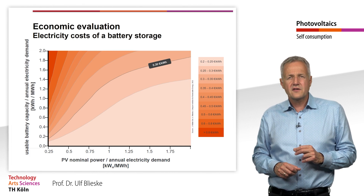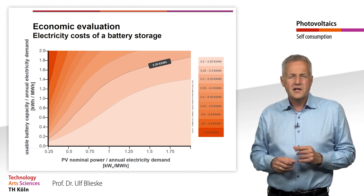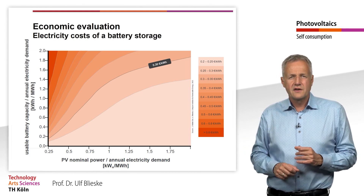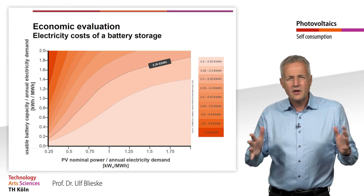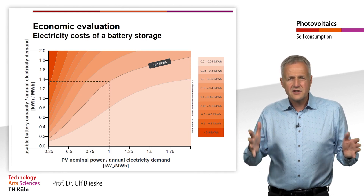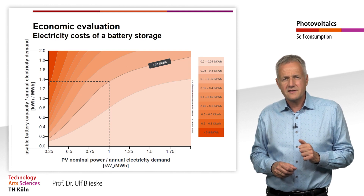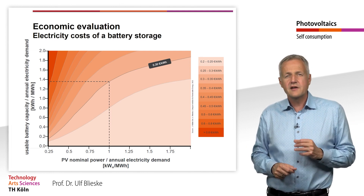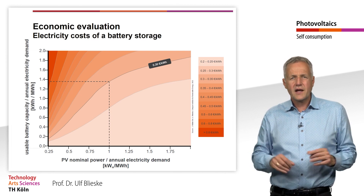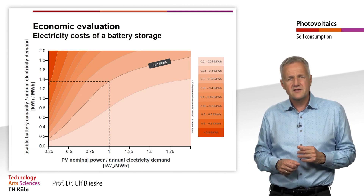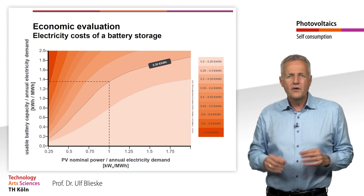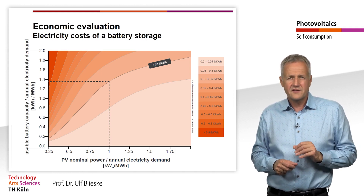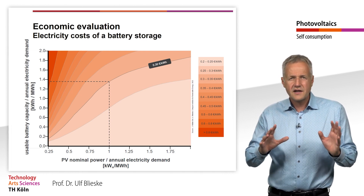We can calculate the electricity cost of the battery storage for any combination of system size, annual energy demand and storage size. Looking again at a 3 kW peak system with an annual power demand of 3 MWh, the ratio of usable battery capacity in kWh to annual energy demand in MWh should not exceed 1.3 to be economically viable in Germany. For an annual energy demand of 3 MWh, this corresponds to a usable battery capacity of just under 4 kWh. It should be noted that the battery storage system does not generate a profit if designed precisely at this economic limit — for that, it would have to be designed somewhat smaller.